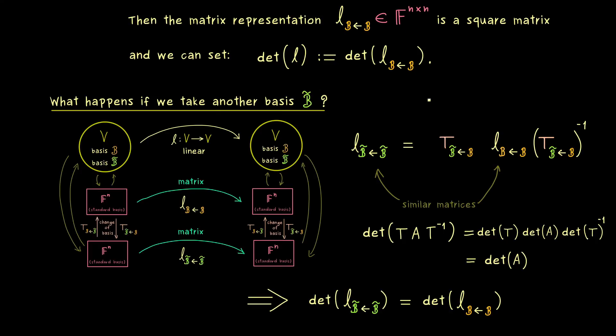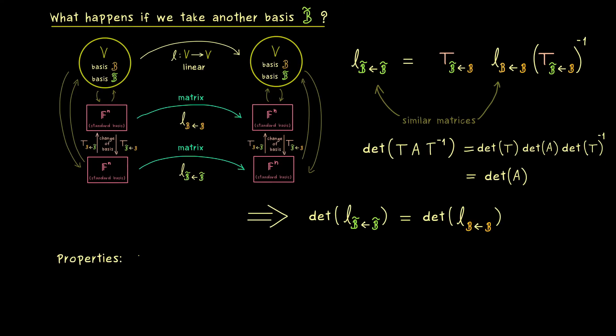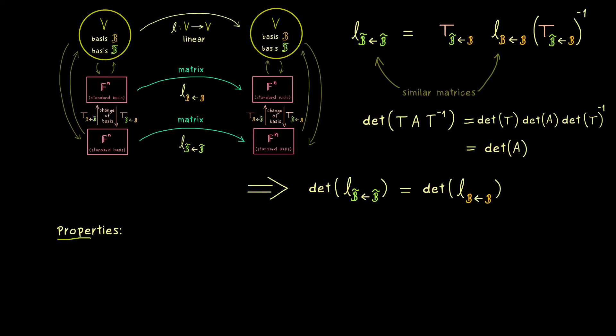Moreover, this also means that all the properties we have for the determinant of matrices translate to the general determinant now. For example, we also have the multiplicative rule there. However, in the general context, we have a composition of two linear maps L and K. And now we know, this determinant of the composition can be written as the product of two determinants. So we simply have determinant of L times determinant of K. But obviously this whole formula only makes sense if L is a linear map from V to V and K as well.